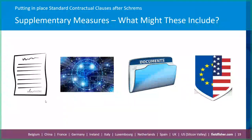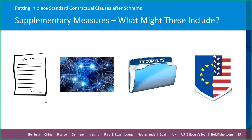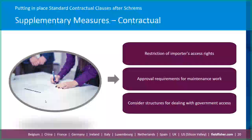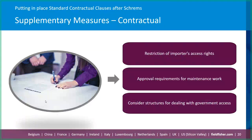Once we have an understanding of context, there are several categories in which importers and exporters could implement supplementary measures: contractual mechanisms, technical mechanisms, policy measures, and if relevant, continued adherence to the privacy shield. Some contractual measures might include restriction of the importer's access rights on a need-to-know basis, with further detail in the contractual relationship — for example, naming individuals and controls around when and how access can occur — specific approval requirements for maintenance works, and contractual structures for dealing with government requests.